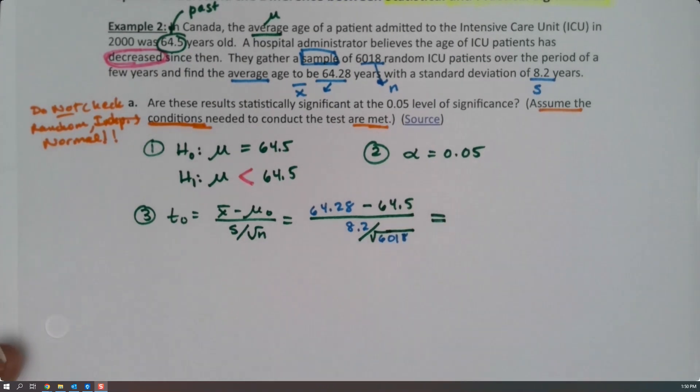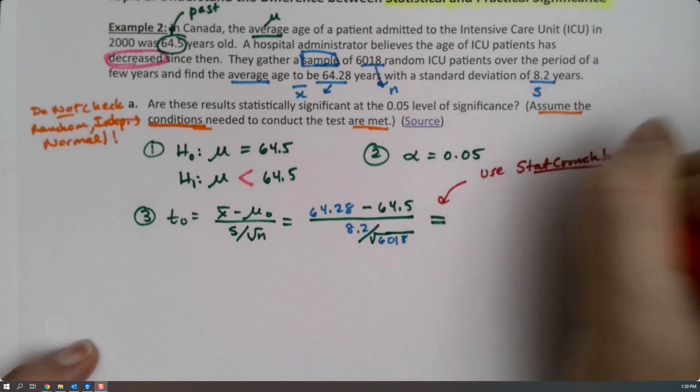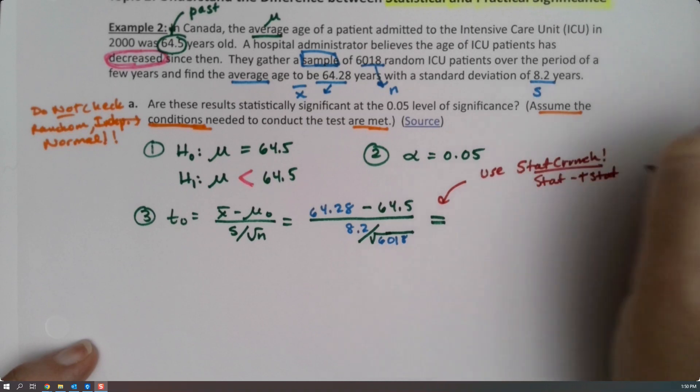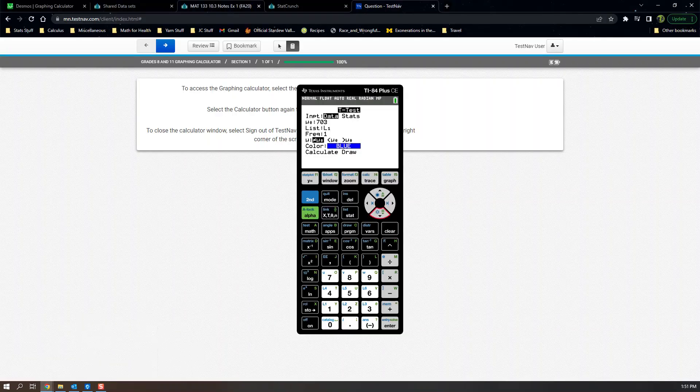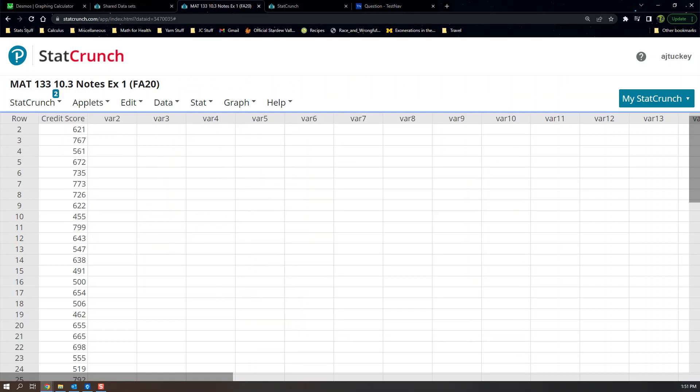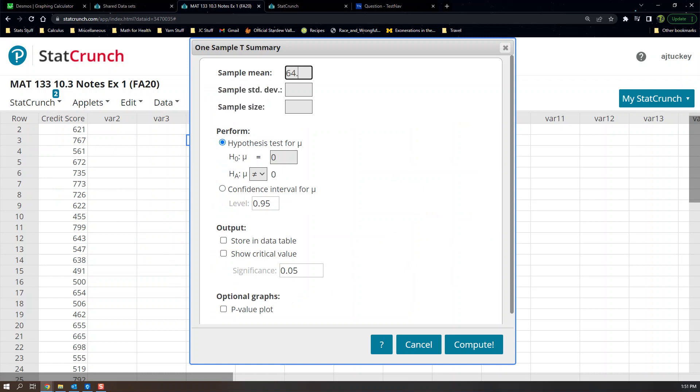As per usual, we're not going to find this ourselves. We are going to use StatCrunch. So it's stat, t-stat, one sample. This is with summary because we don't have a data table here. That's actually easier, it requires less work on our part. So let's go to StatCrunch. Stat, t-stat, one sample with summary this time. The sample mean was 64.28, the sample standard deviation was 8.2, the sample size was 6018. The null hypothesis is that it's 64.5 and the alternative is that it has decreased.